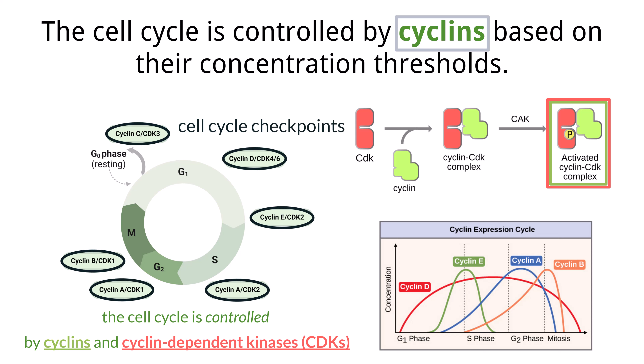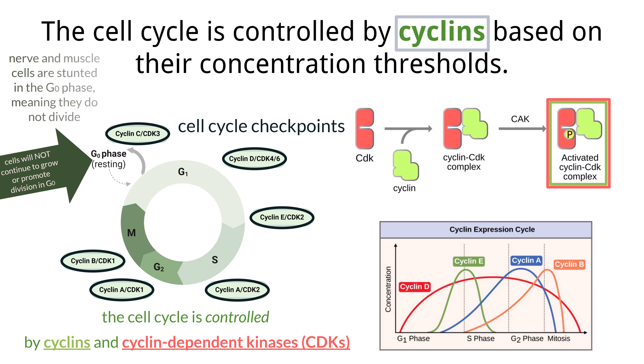Some cells will pause during G1 and enter a phase called G0, which is a phase where the cell does not grow. Some cells will stay in G0 for a short time, waiting for another signal to continue into G1, while other cells stay permanently in G0. Examples of cells that do not undergo mitosis and are constantly in G0 include nerve and muscle cells.